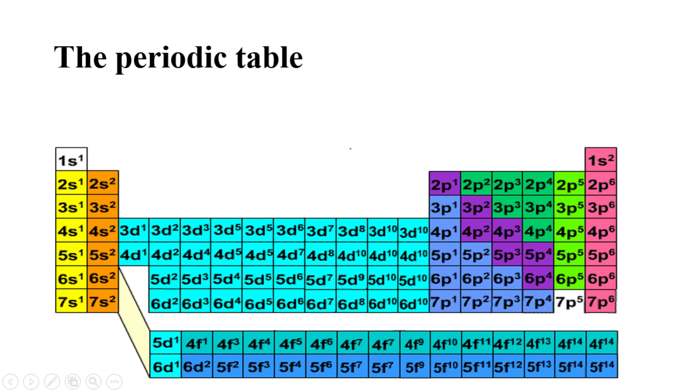The first period or row of the periodic table consists of elements that have their electrons filling the 1s orbital. The second period elements fill the 2s and 2p orbitals, while the third period elements fill the 3s, 3p, and 3d orbitals. This pattern continues throughout the periodic table, with each subsequent period adding new shells and subshells until the seventh period. That was everything for this video. Thank you for watching.